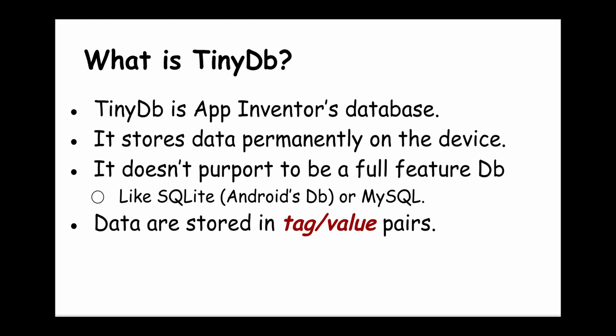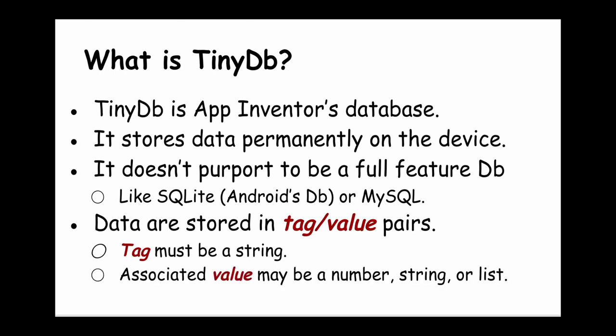In App Inventor, data are stored in tag-value pairs, as we're going to see. The tag has to be a string. It's very important. The value associated with the tag can be a number, a string, or a list.